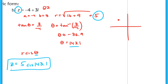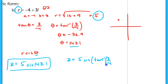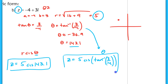You could also express the exact answer as Z equals 5 times cis of the inverse tangent of (3 over negative 4), since that expression represents theta. But when relying on a calculator, write Z equals 5 cis(143.1°).